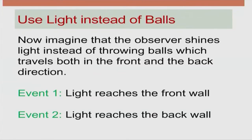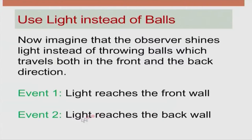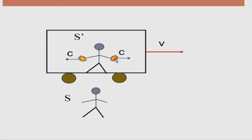Now I change this scenario. I assume special theory of relativity and replace the balls with light sources. I have two light sources; I shine two lights, one in the forward direction and another in the backward direction. The events are the same, except now instead of a ball reaching the wall, it is light reaching the wall. Let us assume the second postulate of special theory of relativity is correct.